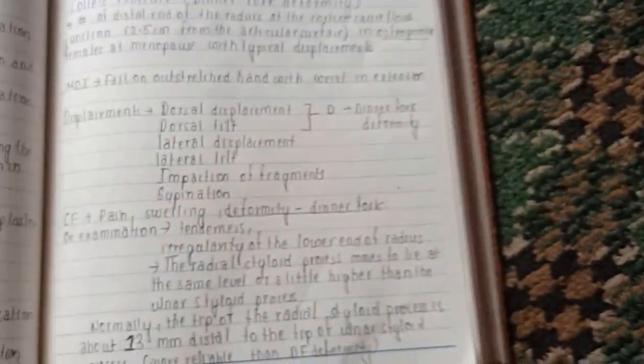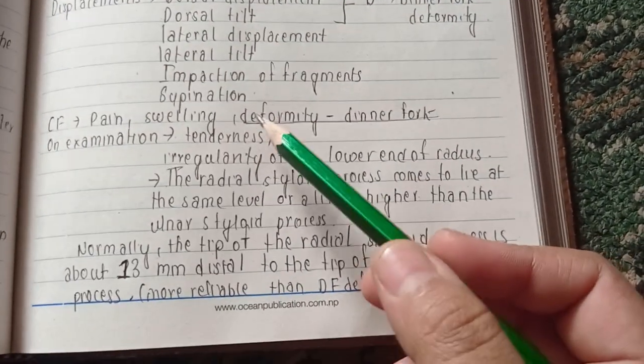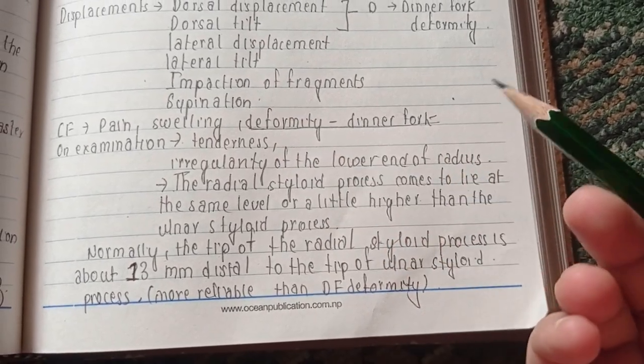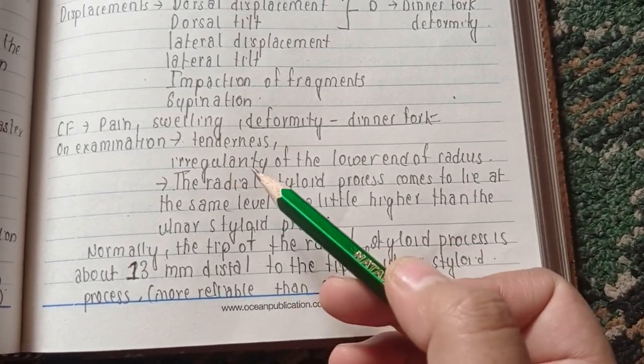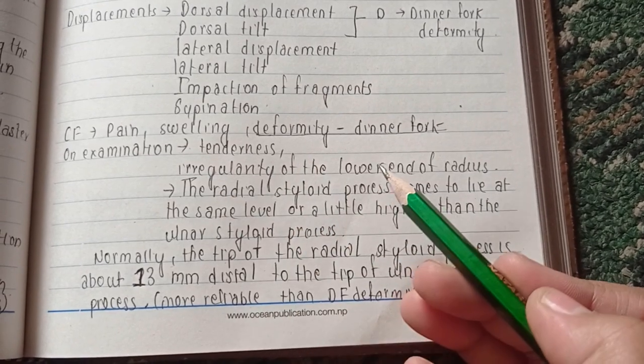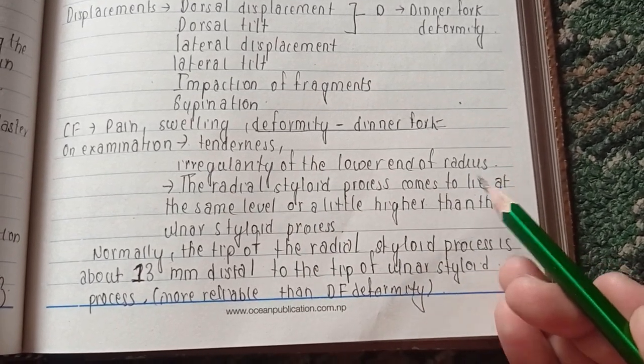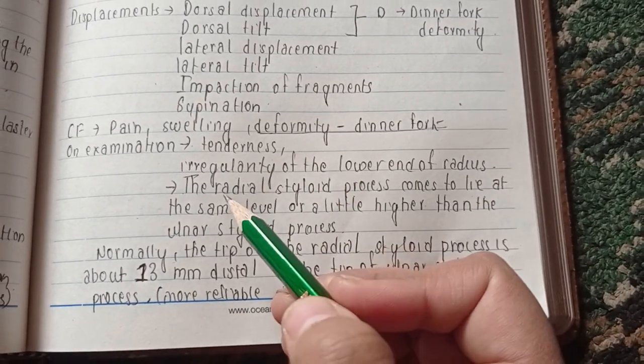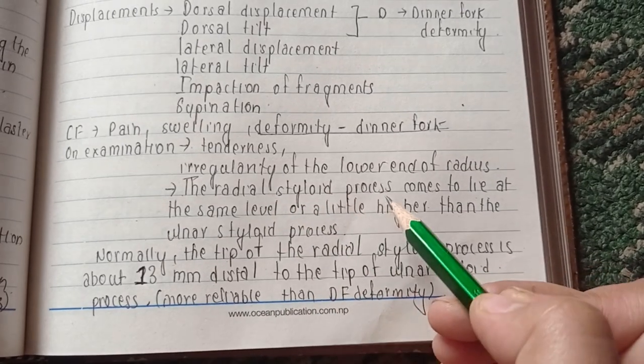On examination there is tenderness because there is fracture, and there is irregularity of the lower end of the radius as we have deformity.